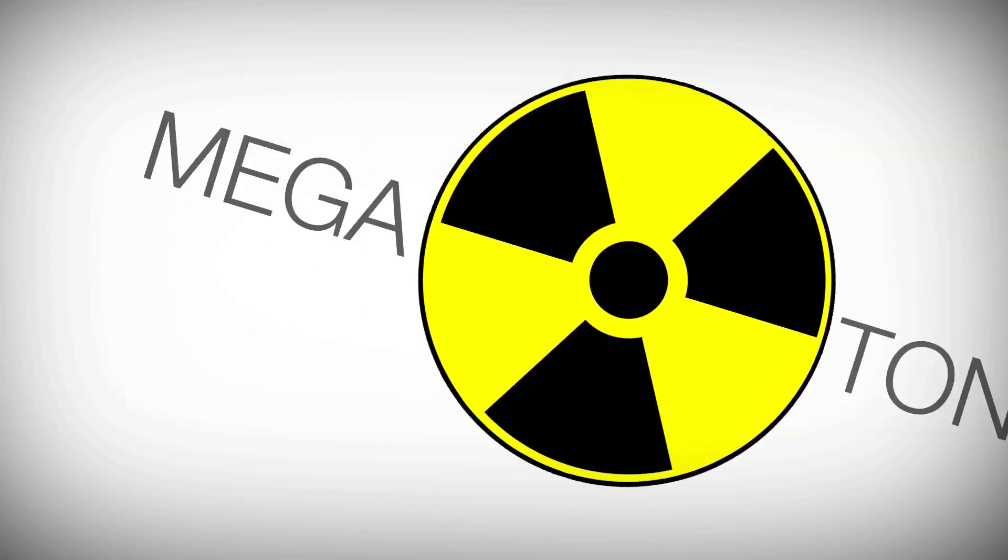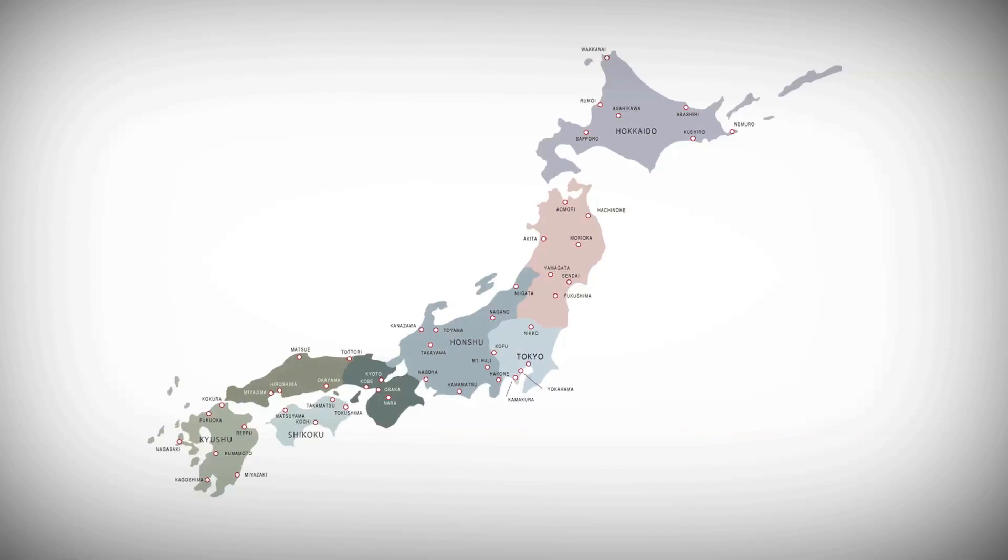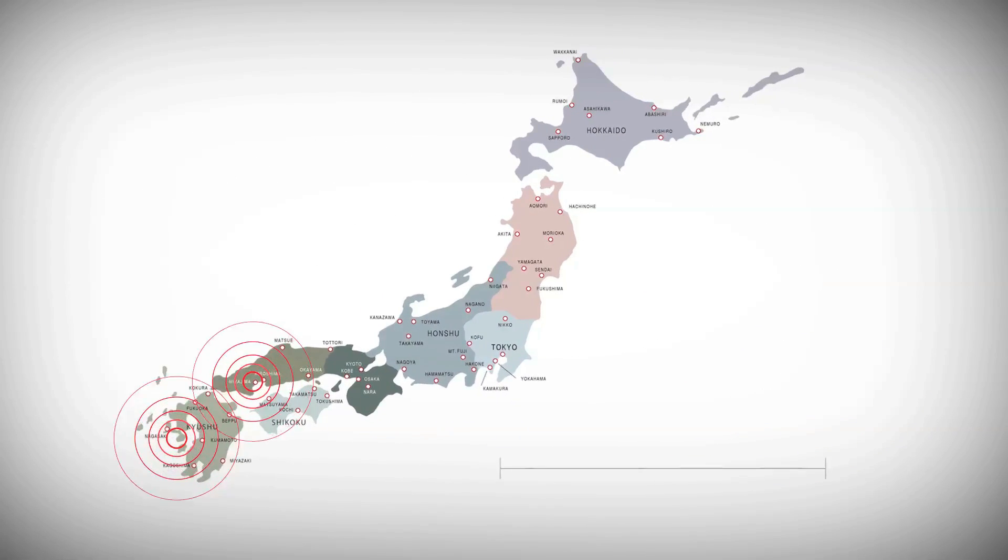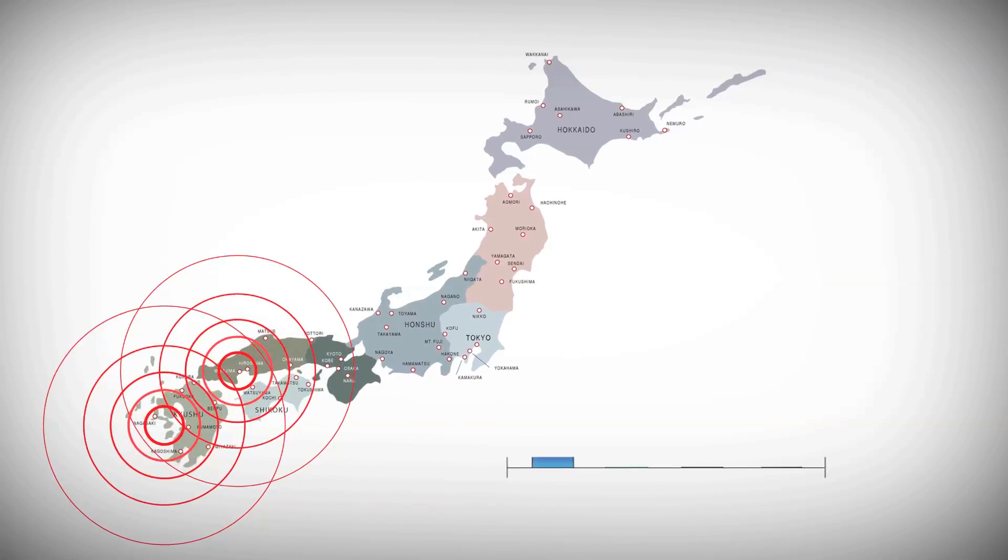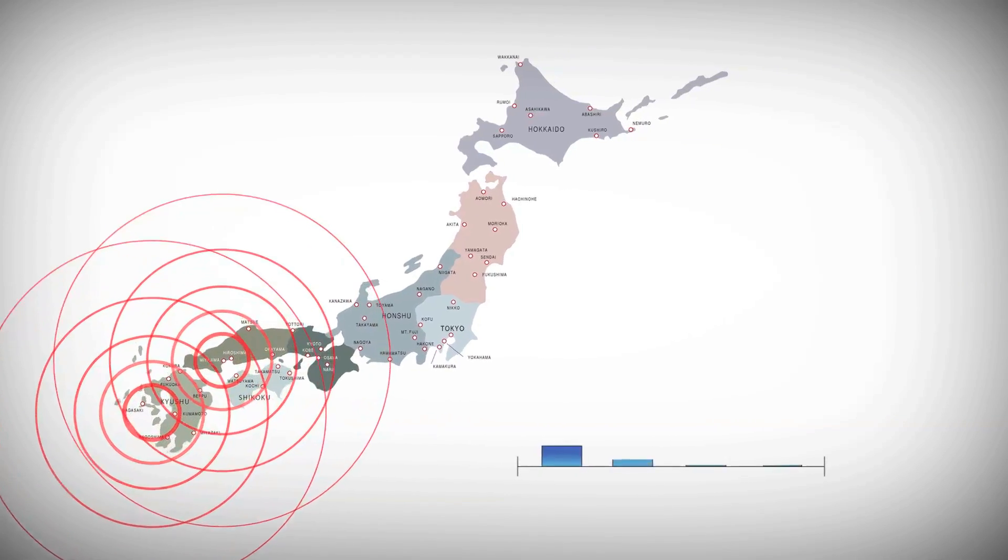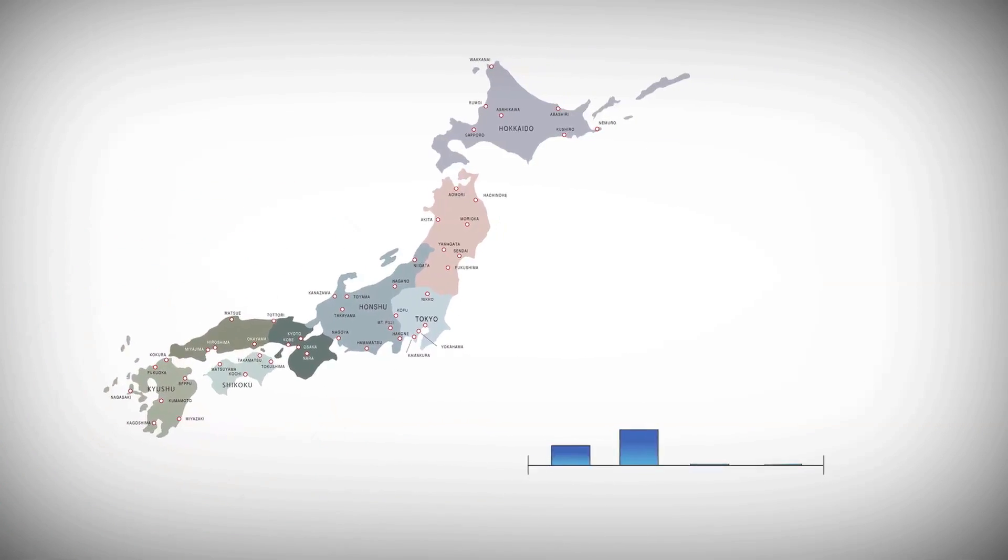First, a quick lesson. When talking about nuclear bombs, we talk in terms of megatons of energy released. The most infamous nuclear bombs, the two dropped on Hiroshima and Nagasaki in the summer of 1945, each measured between 0.01 and 0.02 megatons.